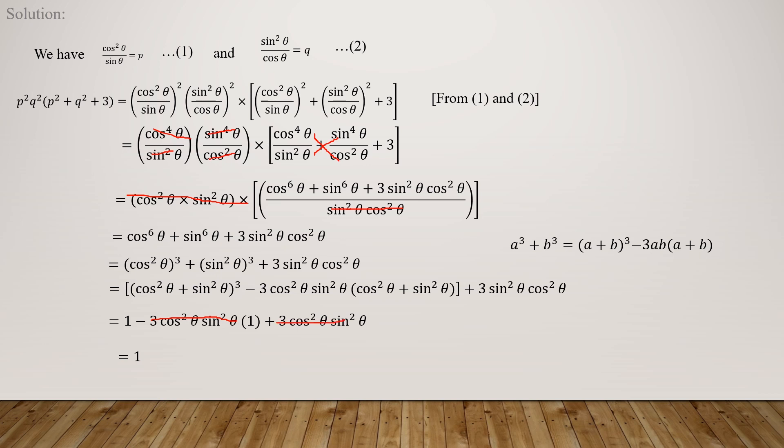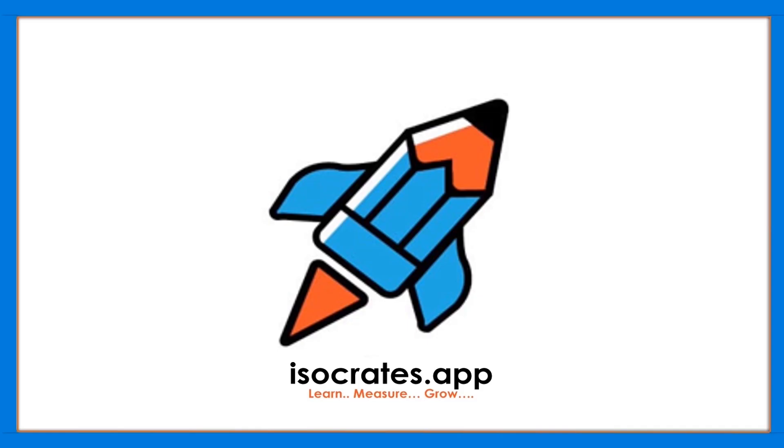The +3cos²θsin²θ and −3cos²θsin²θ cancel, leaving 1 − 0 = 1. Therefore p²q²(p²+q²+3) = 1. Hence proved.